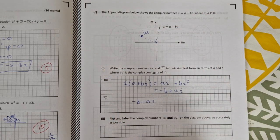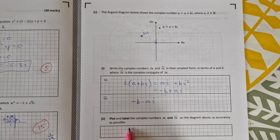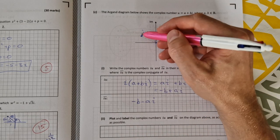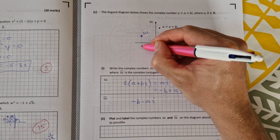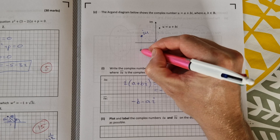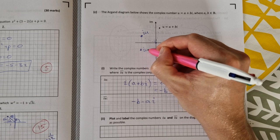And then if I wanted to plot iu bar, the complex conjugate, that is a reflection of that through the real axis there like that. So here is iu bar.